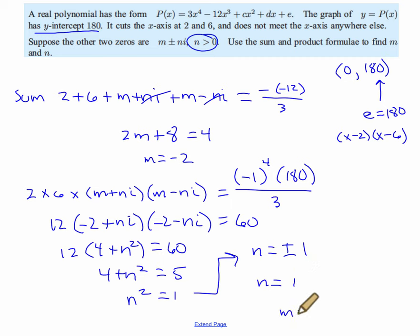So we found m and n. M is equal to negative 2 and n is equal to 1. Wowzers, that is a whole lot of stuff. Now, we didn't end up multiplying here, but I just wanted to point out that of course if 2 and 6 cut the x-axis, factors of the polynomial are x minus 2 and x minus 6.